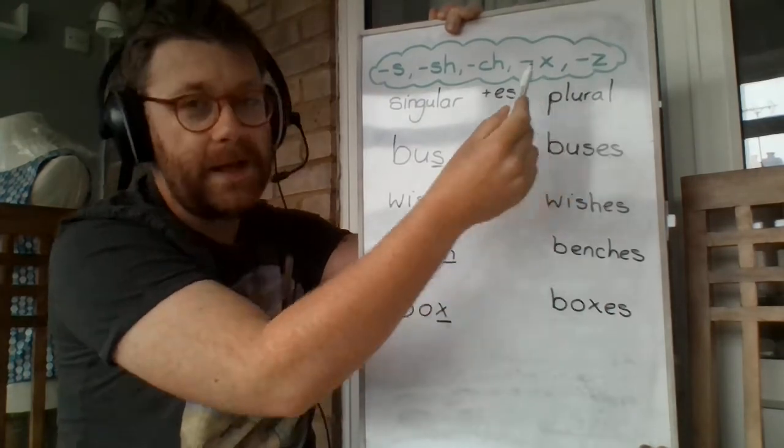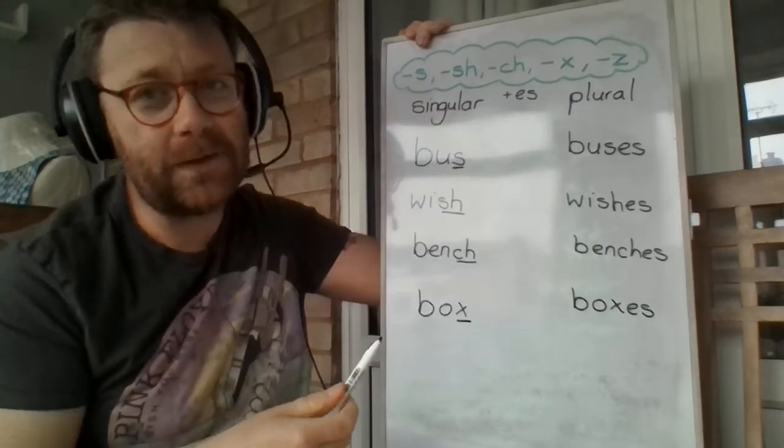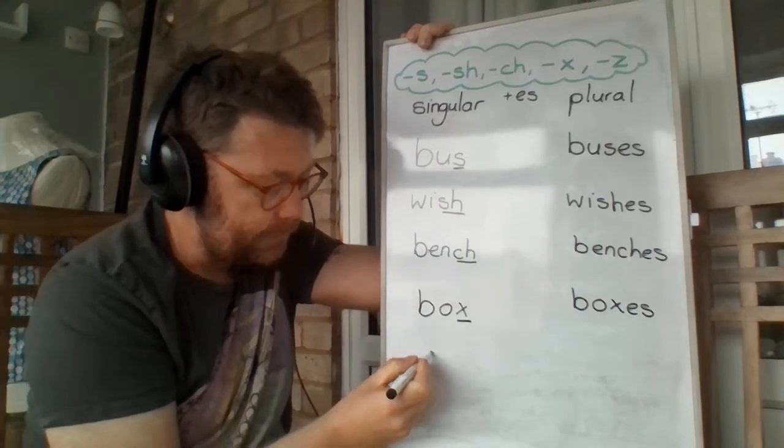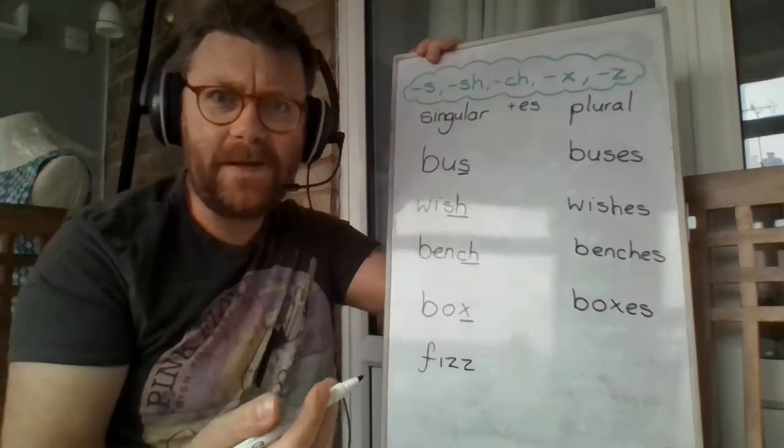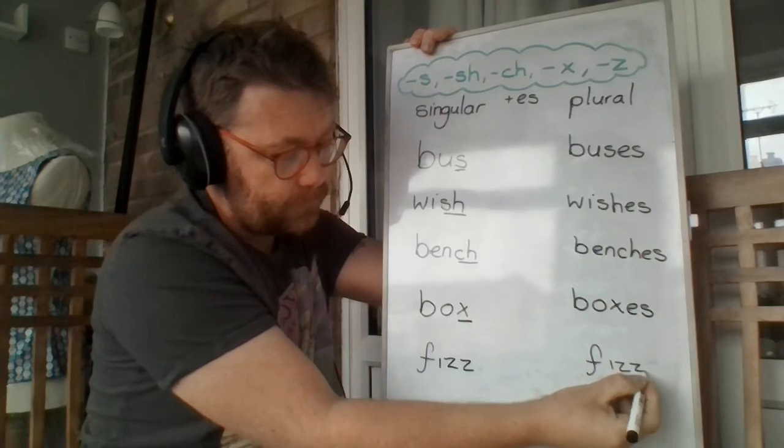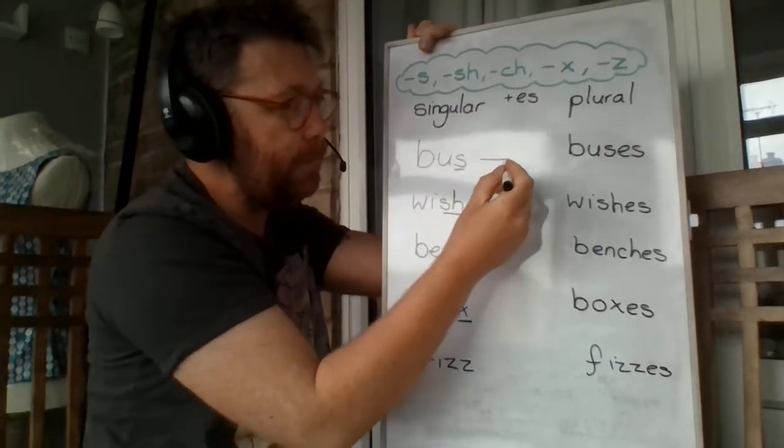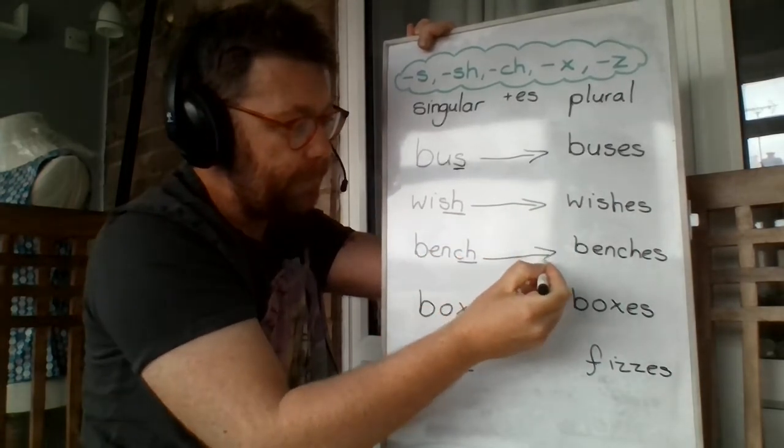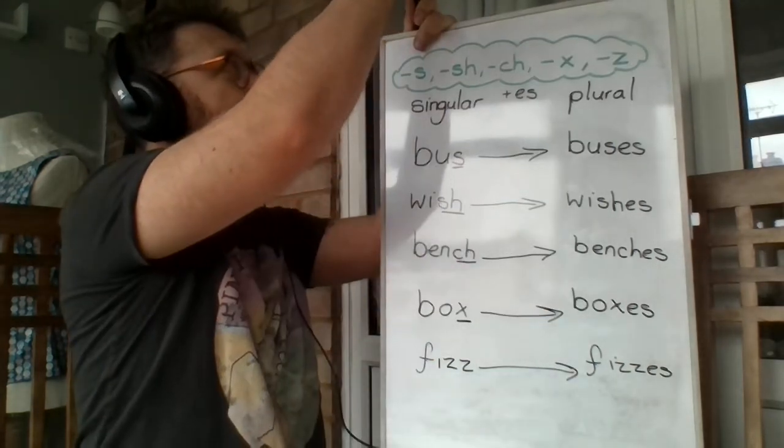And finally, let's look for a word that ends with Z. There aren't many nouns that end with Z, especially nice nouns that I can use in doing a SPAG lesson. So I used Fizz. Wow. Did you see that Fizz? I saw lots of Fizzes. Ends with Z. So we add ES. So bus becomes buses. Wish, wishes. Bench, benches. Box, boxes. Fizz, fizzes.